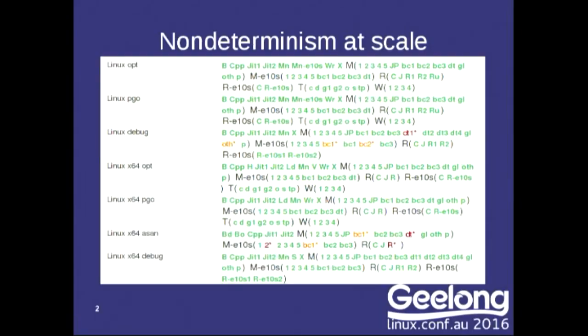Thank you very much. When you're developing and deploying software at large scale, non-determinism really, really sucks. This is a screenshot of the results of tests run against a particular commit to the main repository that builds Firefox. All those green letters indicate test suites where the tests all passed. The orange letters indicate test suites that had one or more test failures. The red letters indicate test suites that just completely fell over.